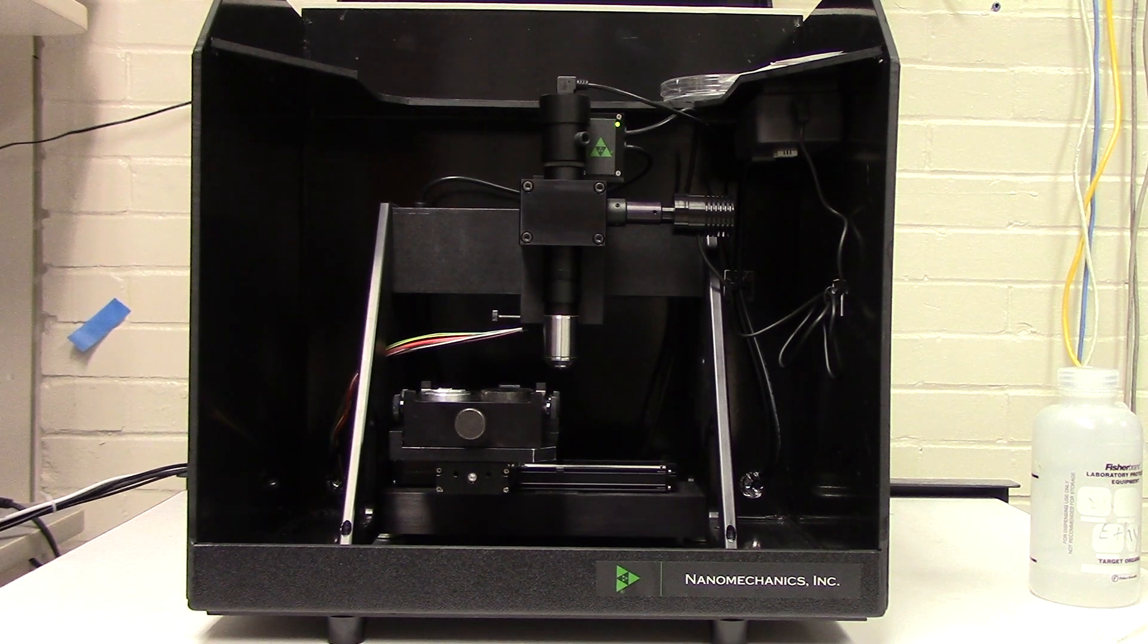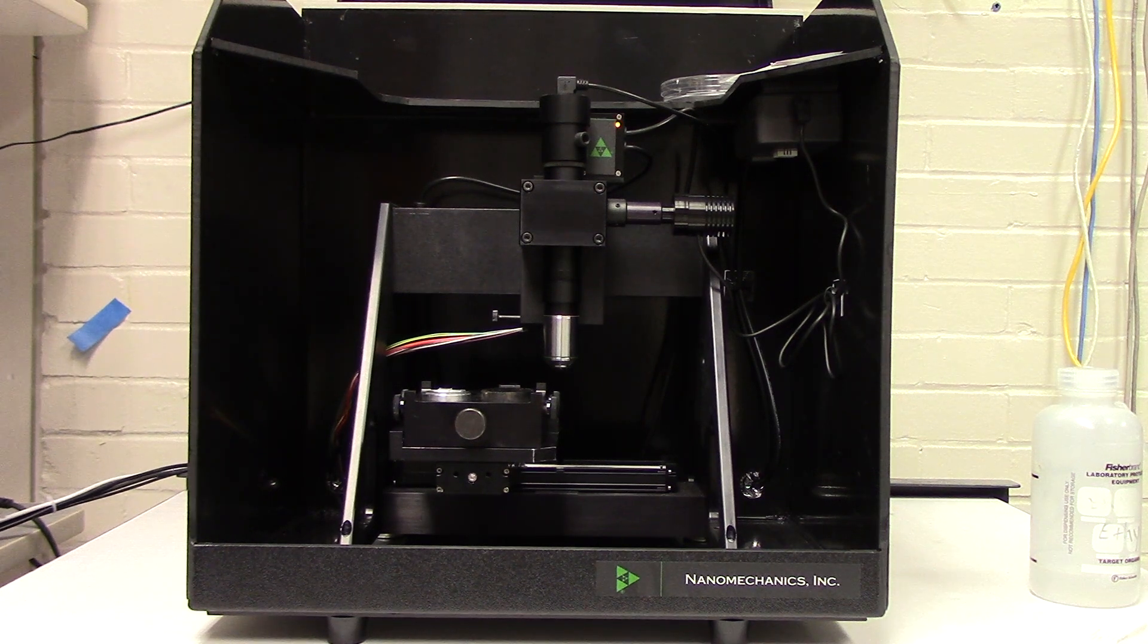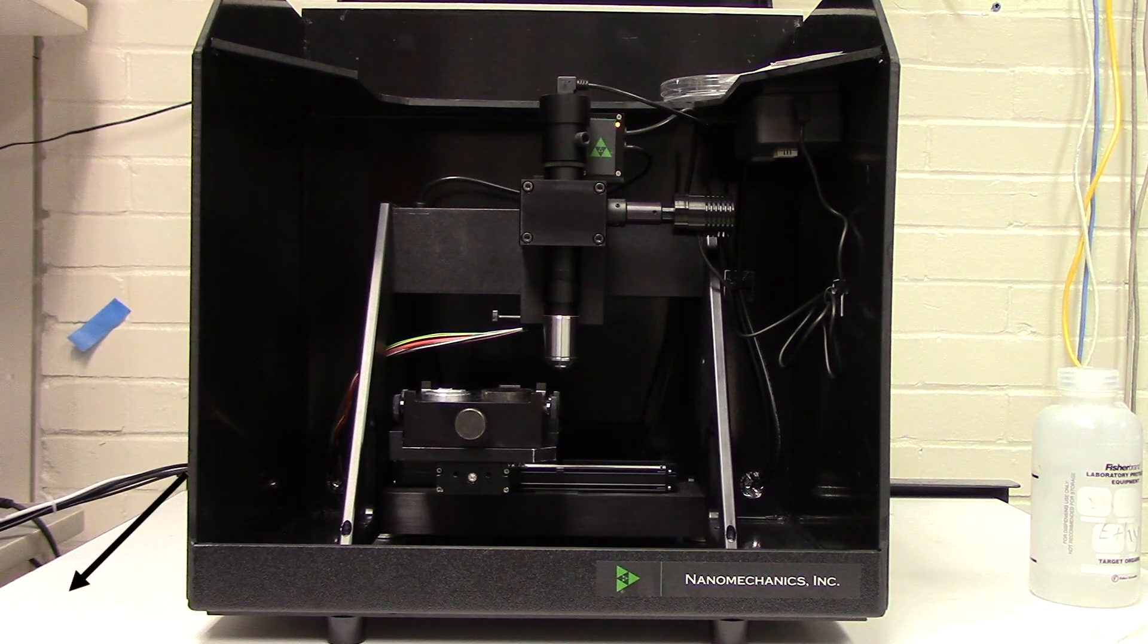Here we have the inside chamber of the Nano Indenter. To further stabilize the system, this chamber sits on top of an optical table to minimize vibrations in the machine.